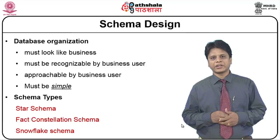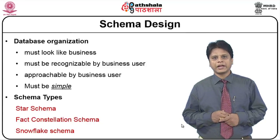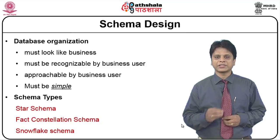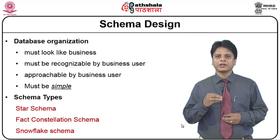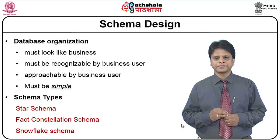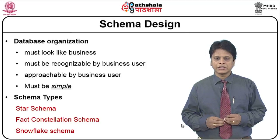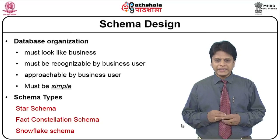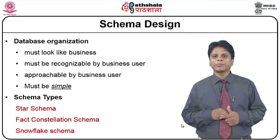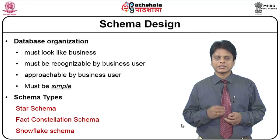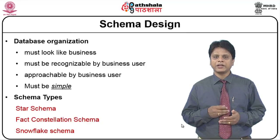Consider any specific database organization. Towards working on a very good data warehouse, these organizations must look like a business initially, and all the data available must be recognizable by a business user. This data needs to be approachable by the business user and should look as simple as possible. With these as basic intentions, people have started defining different types of schemas starting with star, snowflake, and fact constellation types.